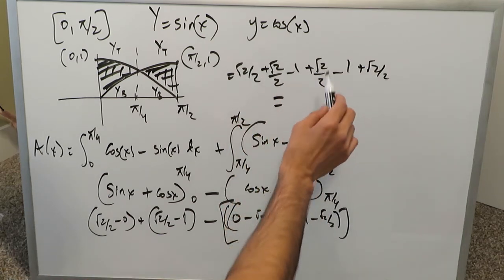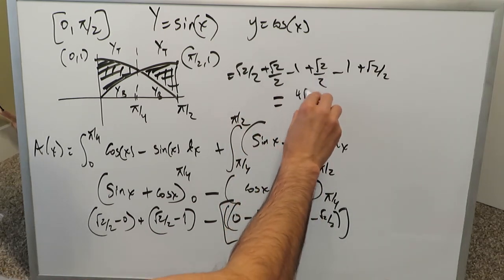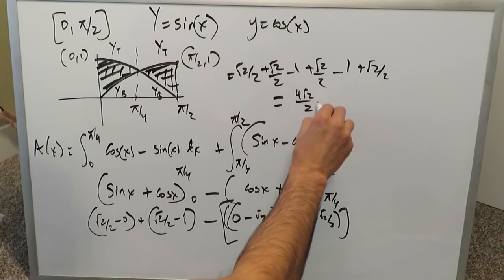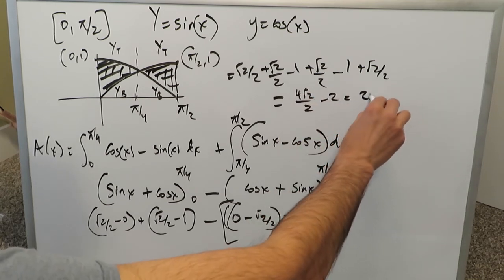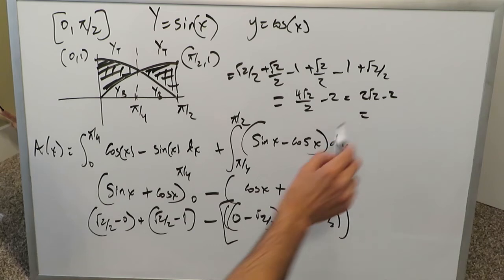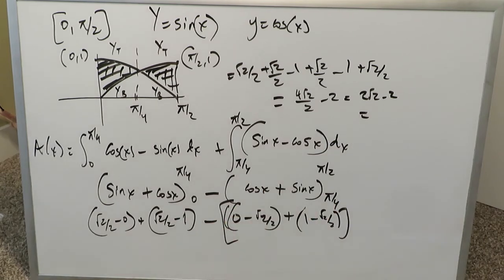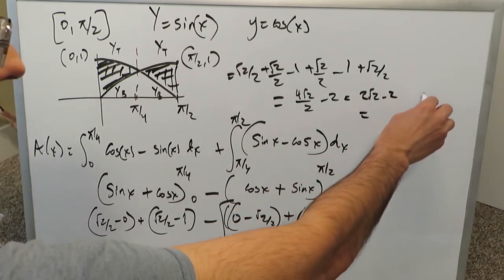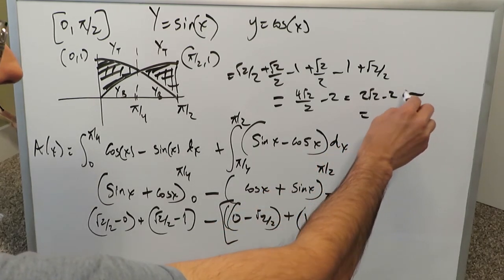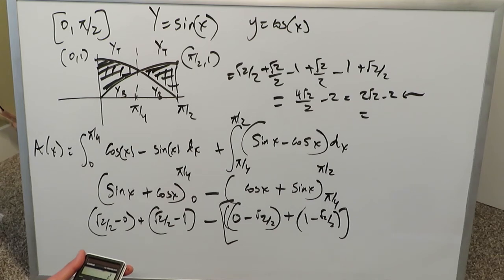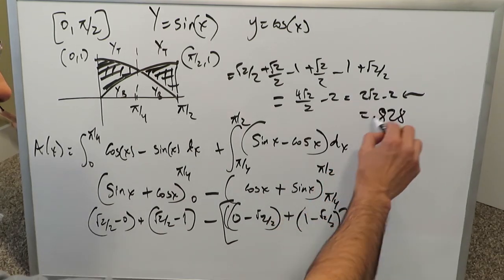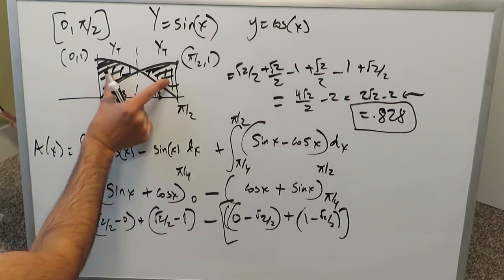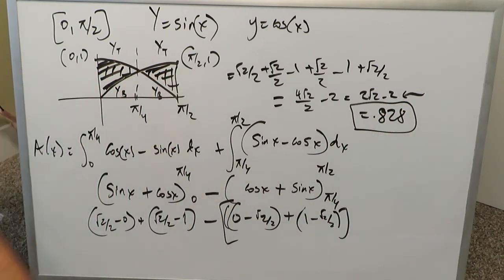Combining all terms carefully — 4·(√2/2) − 2 = 2√2 − 2. This can be presented as a decimal: the area is approximately 0.828, representing the combined total area of the shaded portion. This was the long way of doing it.